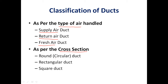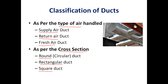The next classification is based on cross-section. If the cross-section is circular it is called a round duct, if rectangular it is called a rectangular duct, and if square it is called a square duct. The round duct consists of a main duct with branches that carry conditioned air to different locations.